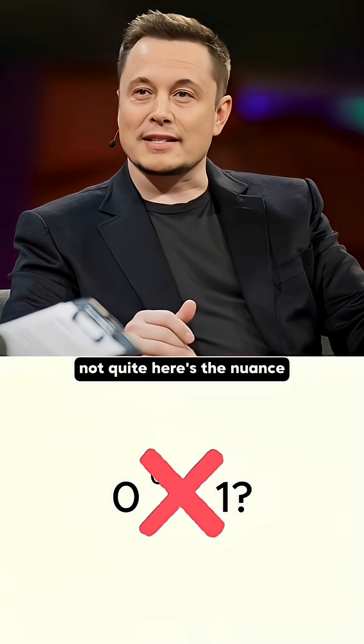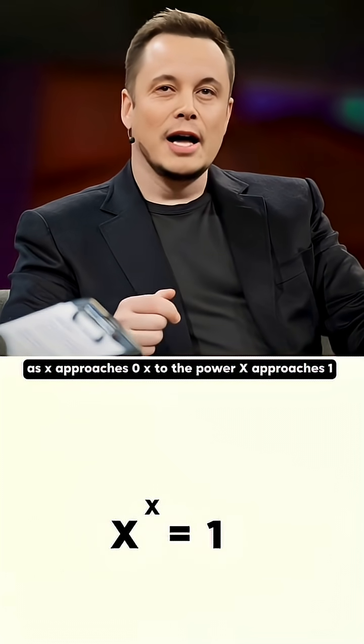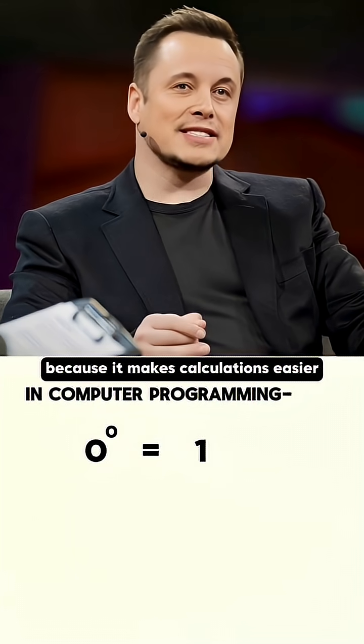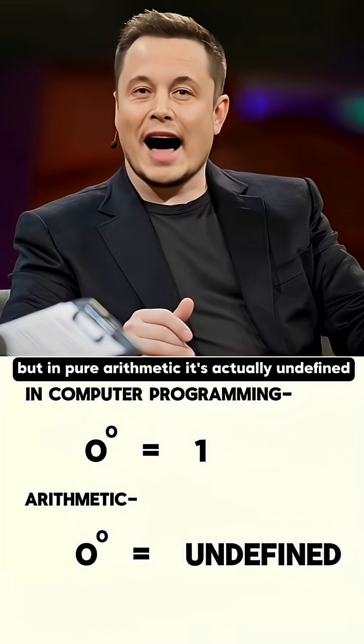Not quite. Here's the nuance. As x approaches 0, x to the power x approaches 1. So in computer programming, we define 0 to the power 0 as 1 because it makes calculations easier. But in pure arithmetic, it's actually undefined.